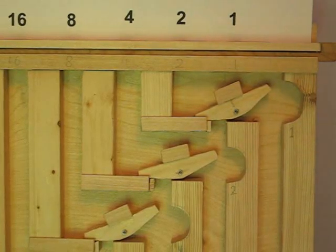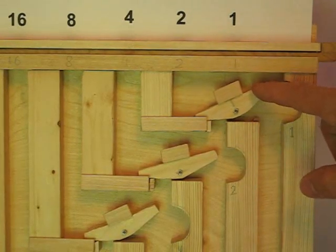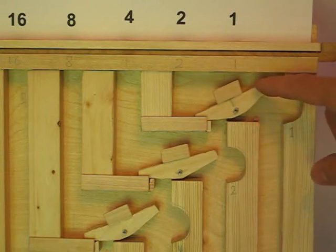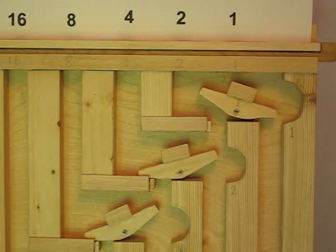The adding machine state is stored in these internal rockers. When the rocker is set to the left that represents a zero. When it's rocked to the right it's a one.